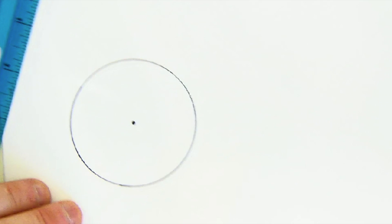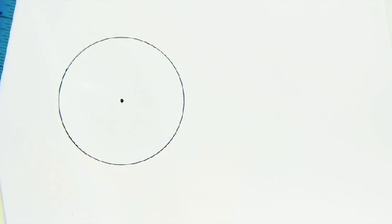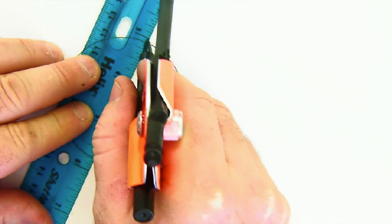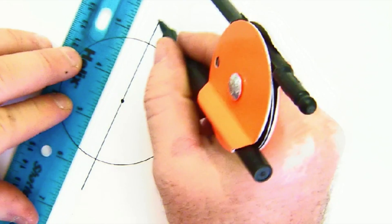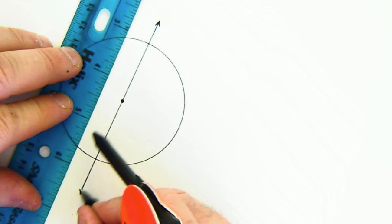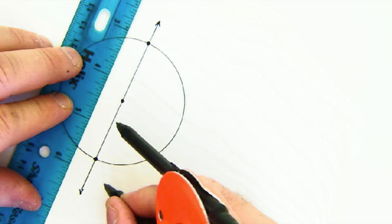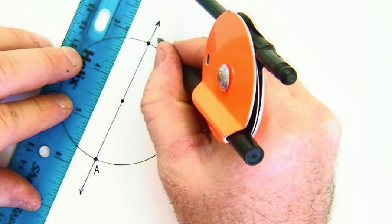Now, we kind of work backwards a little bit here to create our square. The first thing I'm going to do is create a diameter, which of course goes through the center. Here's my diameter, and we'll call this point A and C.